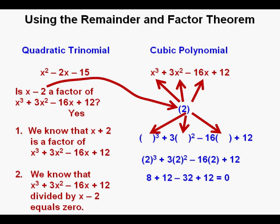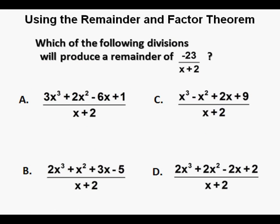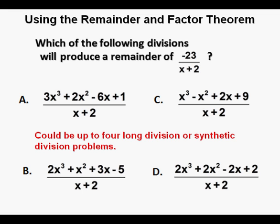Let's apply the remainder and factor theorem to a problem I recently gave my students on a test. Which of the following divisions will produce a remainder of minus 23 over x plus 2?